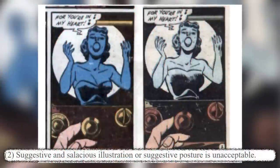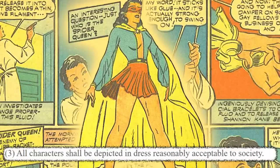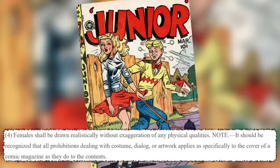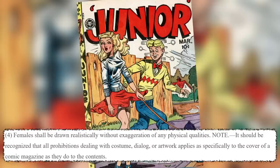Costume section — rule one: nudity in any form is prohibited, as is indecent or undue exposure. This was a fun section where they went through the covers of different female costumes — too lewd, too suggestive. Rule two: salacious illustration or suggestive posture is unacceptable. Rule three: all characters will be depicted in dress reasonably acceptable to society. Rule four — now they're singling out females: females should be drawn realistically without exaggeration of any physical qualities. The note clarifies all prohibitions dealing with costume, dialogue, or artwork apply as specifically to the cover as to the contents — no tame cover hiding what's inside.